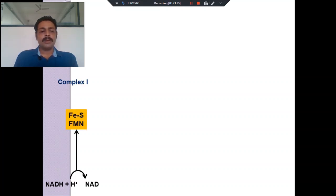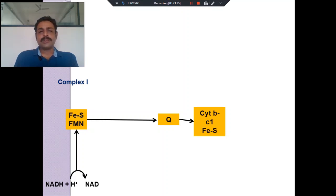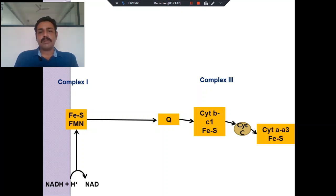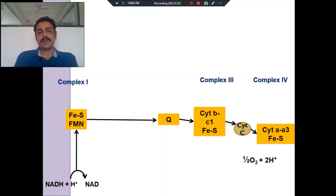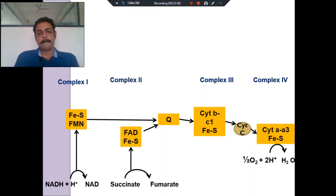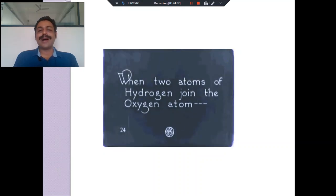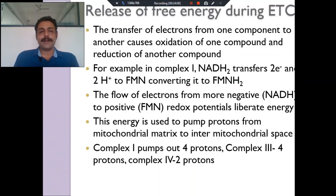The overall reaction is: 2H⁺ + 2e⁻ → H₂O. Complex I absorbs 2H⁺ and two electrons from NADH₂ and donates to coenzyme Q; Complex II also accepts from FADH₂ and donates to coenzyme Q. Coenzyme Q donates to Complex III; Complex III donates to cytochrome c; from cytochrome c it is donated to Complex IV. Complex IV accepts molecular oxygen and converts H⁺ plus electrons plus oxygen to become water. Two atoms of hydrogen join one oxygen atom to form H₂O plus energy.